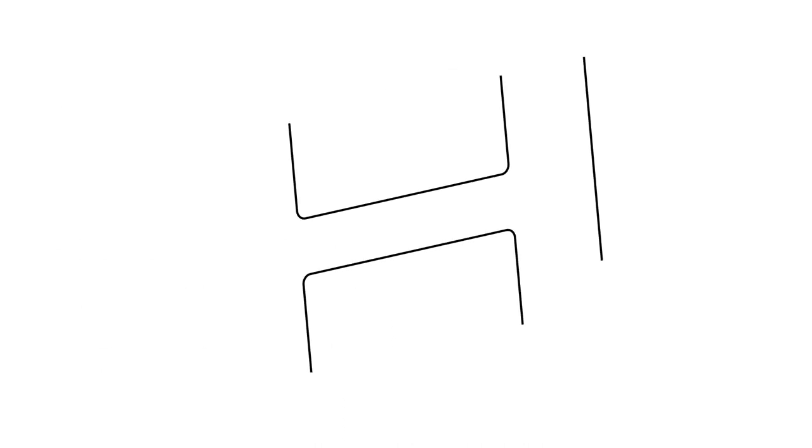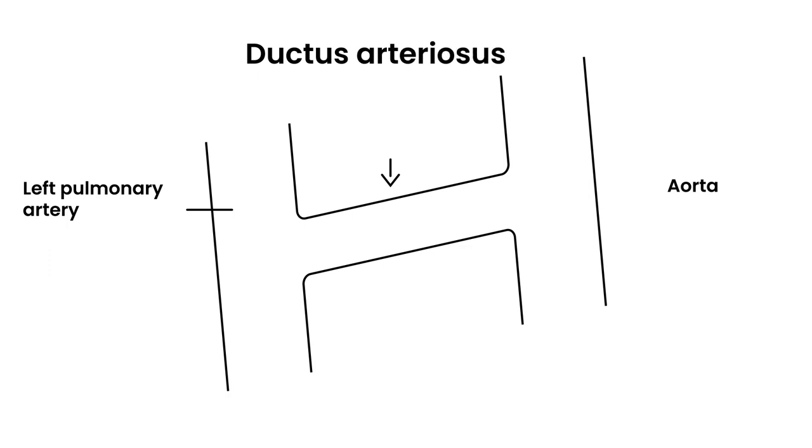And then of course, this connection is the ductus arteriosus. Now if it doesn't close after birth, what happens is, actually what was once a right-to-left circulation shunt, what happens after birth is that this direction reverses.